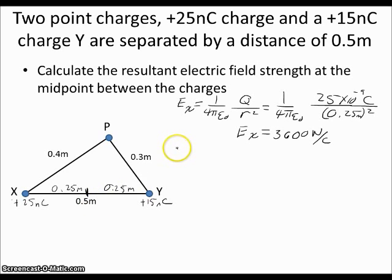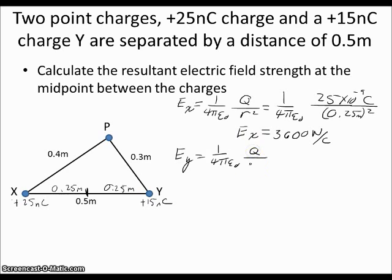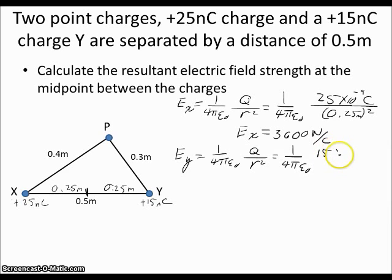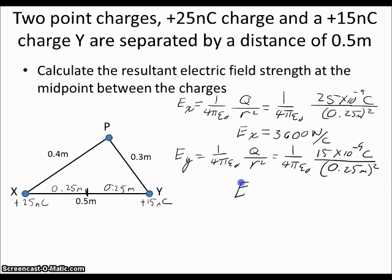Now I find the electric field from charge Y. E_Y is equal to 1 over 4π epsilon-naught times the charge squared. Our charge is 15 nanocoulombs converted to coulombs, divided by our distance, which is the same 0.25 meters as before because it's the midpoint. The electric field at this point from Y is 2200 newtons per coulomb.